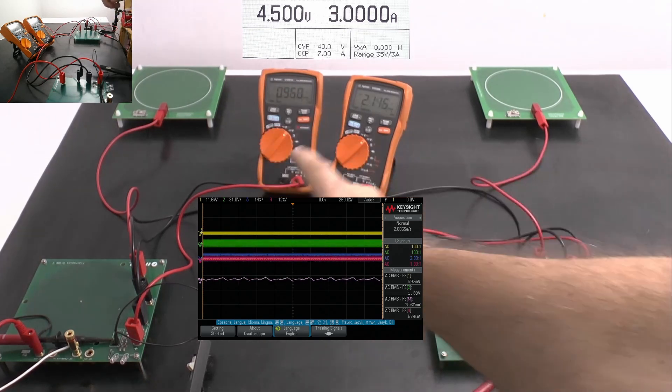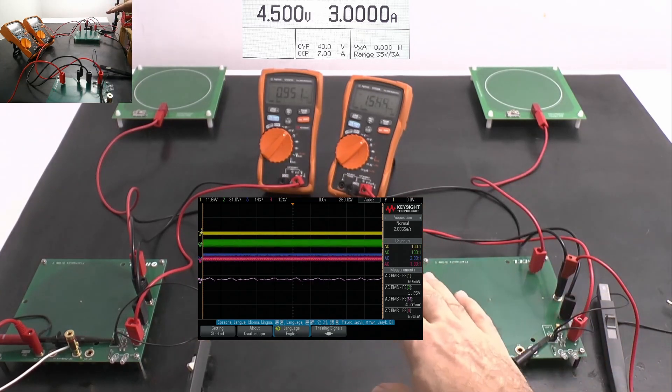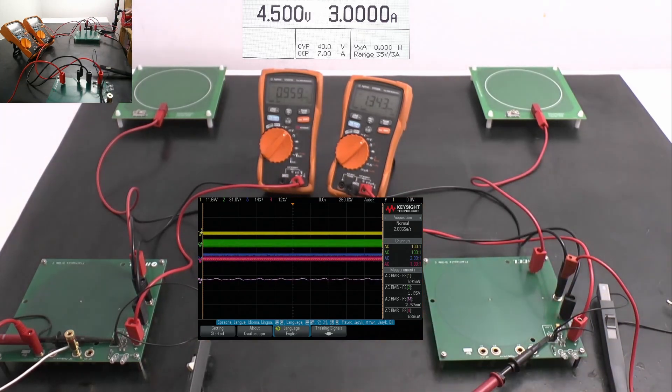I use a DMM for each individual coil to measure the voltage we achieve via the bridge rectifier, and I use also two current probes which I then compare later on to show the difference.